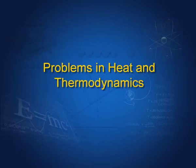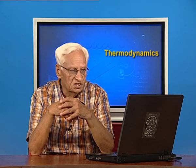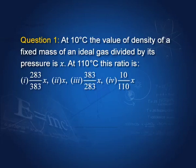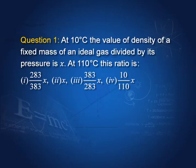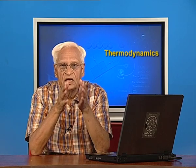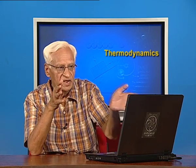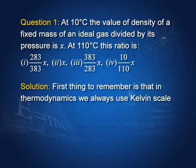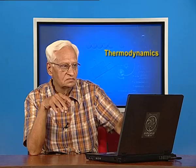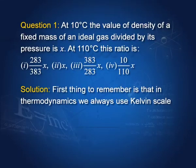This problem is from an entrance examination. At 10 degrees Celsius, the value of density of a fixed mass of an ideal gas divided by its pressure is x. At 110 degrees Celsius, this ratio is? Note: mass is fixed, it is an ideal gas, so we can apply PV = RT. Temperatures are given in Celsius — remember, in thermodynamics we measure temperatures on the Kelvin scale.